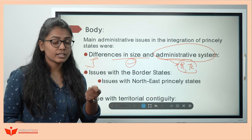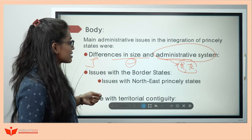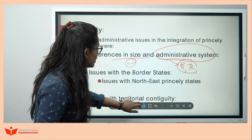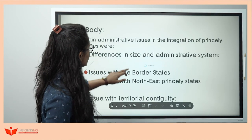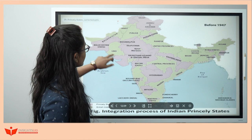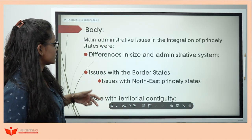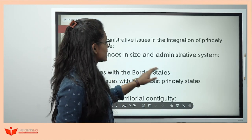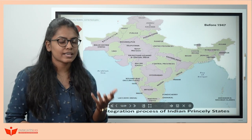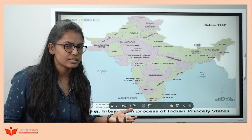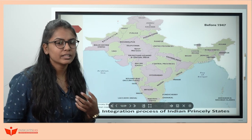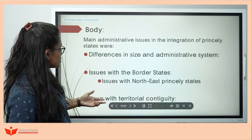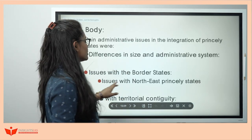Then there was the issue with border states. Jinnah gave a blank check to Rajputana kings so that they would join Pakistan, as they were very near to Pakistan. Then the issue with northeast princely states — even though they signed the instrument of accession, they wanted to maintain their autonomy. Then issue of territorial contiguity: from 1940 to 1956 they tried to join princely states, but it was like patches with no connective boundary — the same issue faced with Pondicherry.